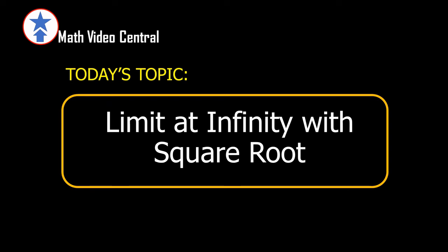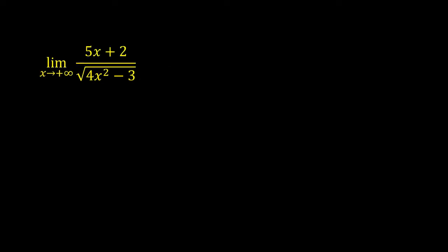Today's topic: limit at infinity with square root. Let us find the limit of 5x plus 2 divided by the square root of 4x squared minus 3 as x approaches positive infinity. If we are going to find the limit by direct substitution, the result will be positive infinity over positive infinity, which is indeterminate.